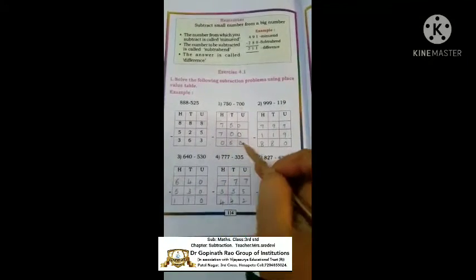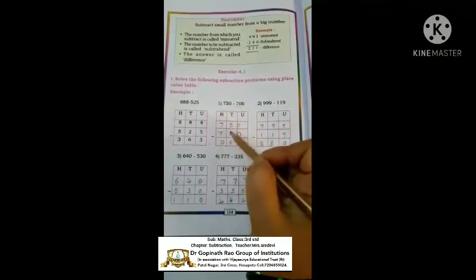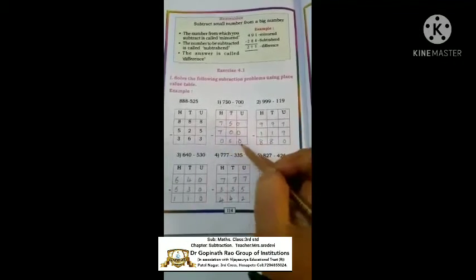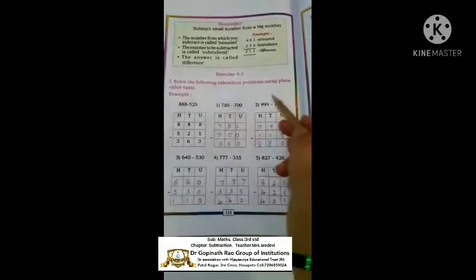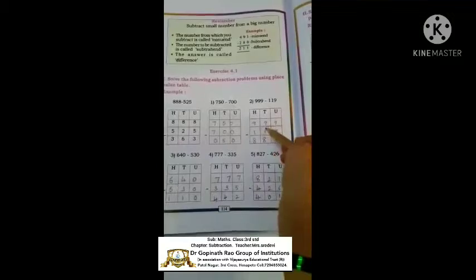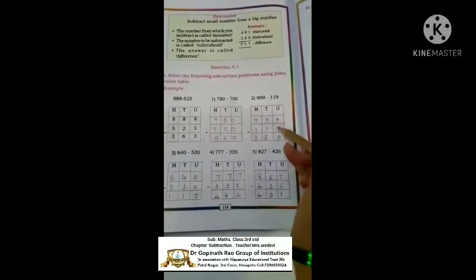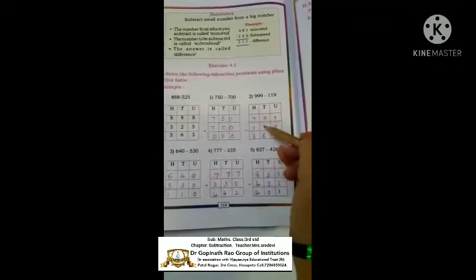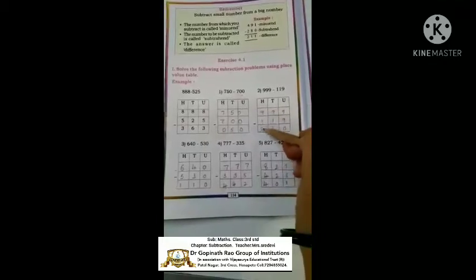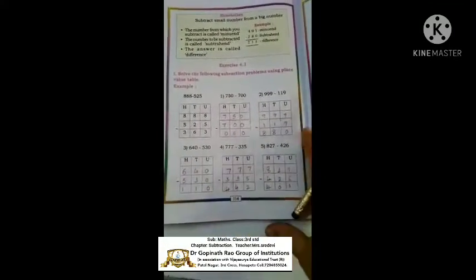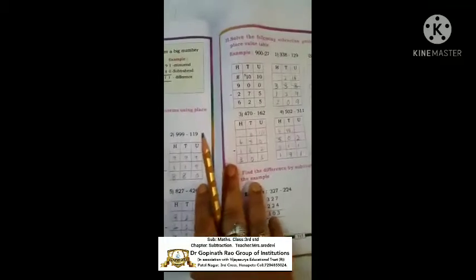For 750 minus 700: 0 minus 0 is 0, 5 minus 0 is 5, then 7 minus 7 is 0, so the answer is 50. Same thing — look at 999 minus 119: 9 minus 9 is 0, 9 minus 1 is 8, again 9 minus 1 is 8. That is 880.